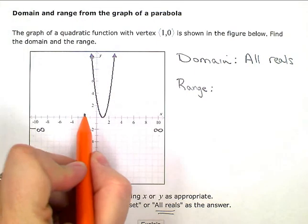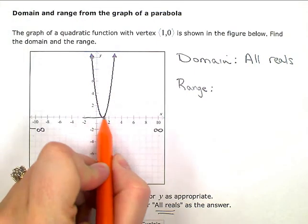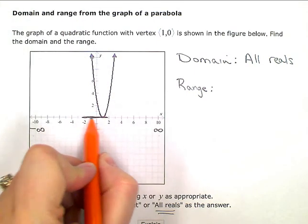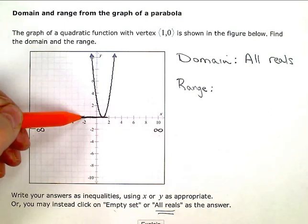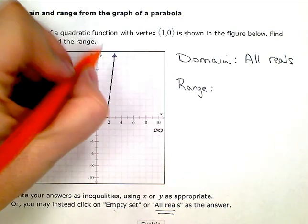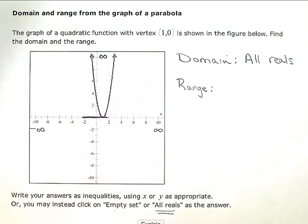So this 0 is the lowest y value I'll ever have, and then it's going to go to infinity in this direction. So for my range, my y's—